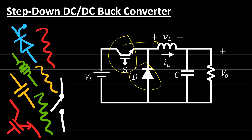Before going to the analysis, let's give some definitions for the active and the passive switch. The transistor is an active switch because we give a signal to the switch to make it open or close. The diode will open or close by the action of the current flowing inside the circuit — if there is current, the diode will be closed; if there is no current, the diode will be open. That's why we call the diode a passive switch and the transistor an active switch, because it responds to the signal that we send to the gate.